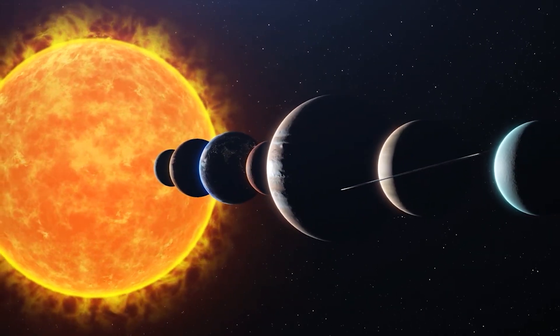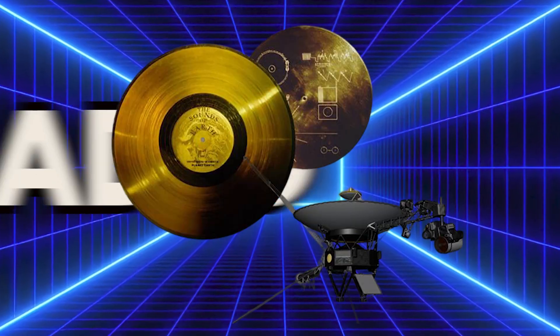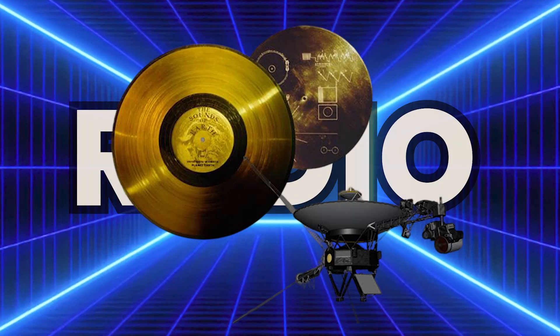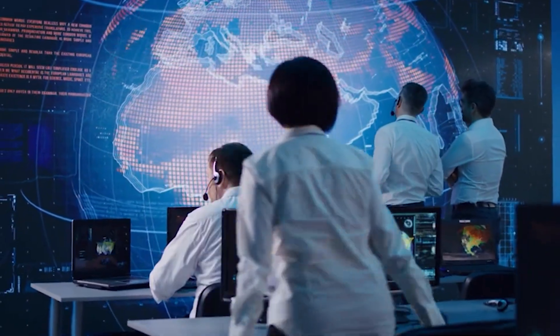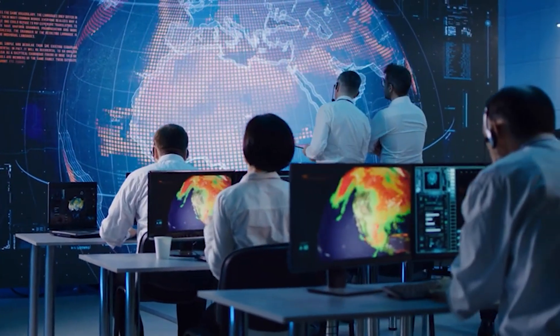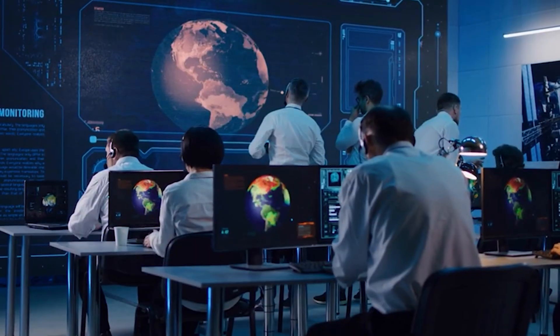Voyager 2 had been sending strange signals for months, but engineers initially assumed this was due to aging hardware or solar interference. The probe is powered by a radioactive thermoelectric generator that's been weakening with time. But a small team at NASA's Jet Propulsion Laboratory wasn't satisfied with that explanation. They noticed that the transmission, though distorted, had recurring structures, mathematical arrangements, and data spikes that didn't align with the standard transmission protocol.